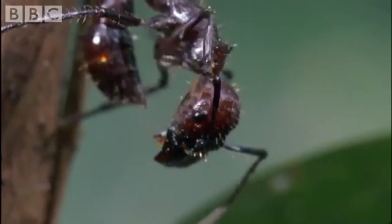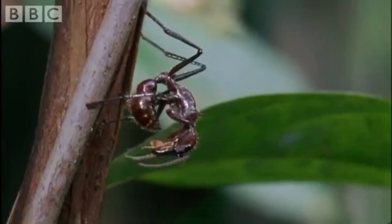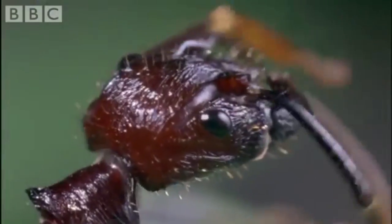Now, the second thing that will happen to the ant is that it will be digested from the inside, except for major organs so the fungus can grow but still control the ant.